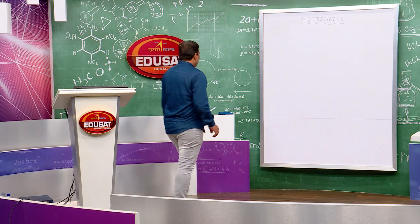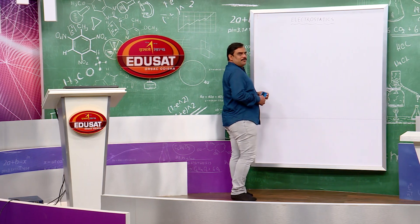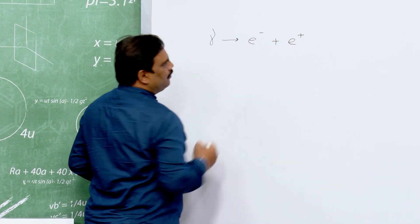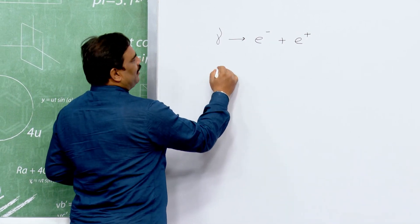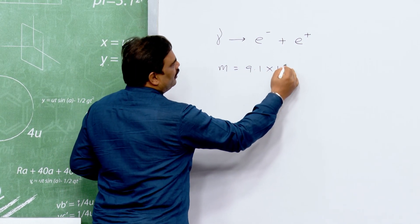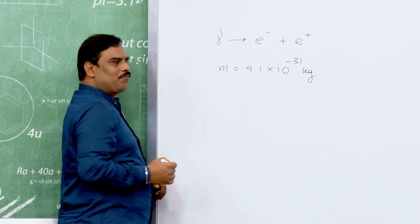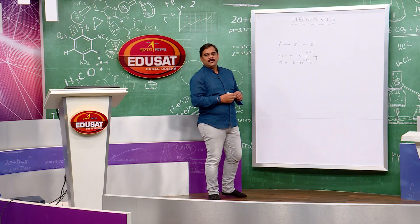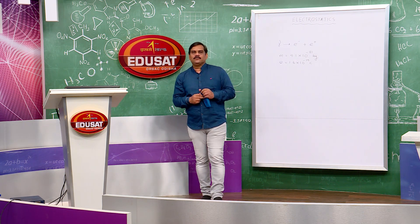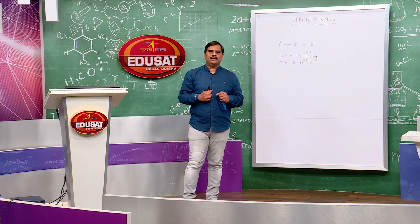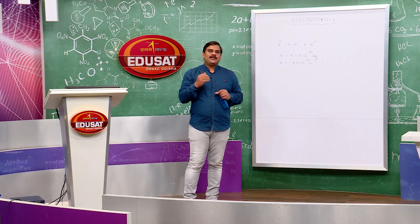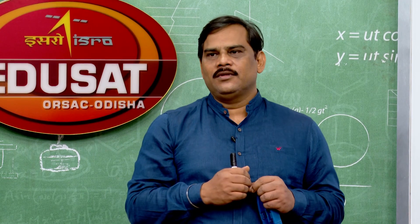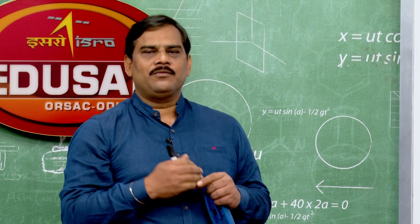Let us see how energy creates a particle. Energy is represented by a photon which gives us a particle electron plus its antiparticle positron. Both are having mass equal to 9.1 × 10⁻³¹ kg and charge 1.6 × 10⁻¹⁹ coulomb. Like these particles, all other particles are also created — thousands of millions of particles. At the time of creation, nature has given some fundamental charges on these masses due to their interaction with the Higgs boson or the Higgs field.